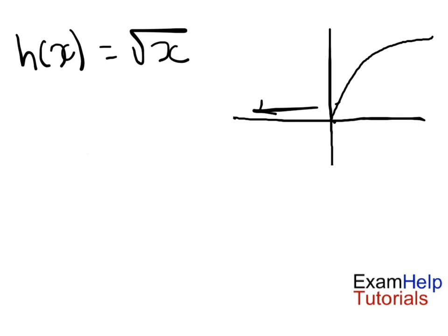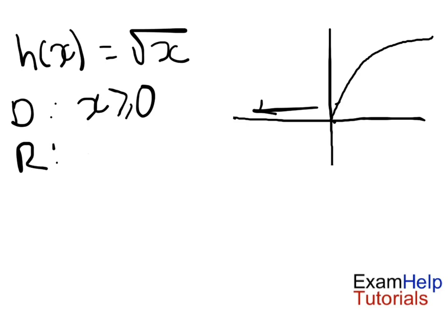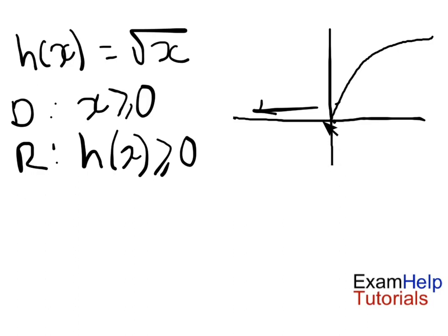Our domain can't include any values on the negative side of the y axis, so it's going to be any x value greater than or equal to 0. And that's actually going to be the same for our range — h of x is greater than or equal to 0, because there are no values on the negative side; it's either 0 or more than that. Here is our domain and here is our range.